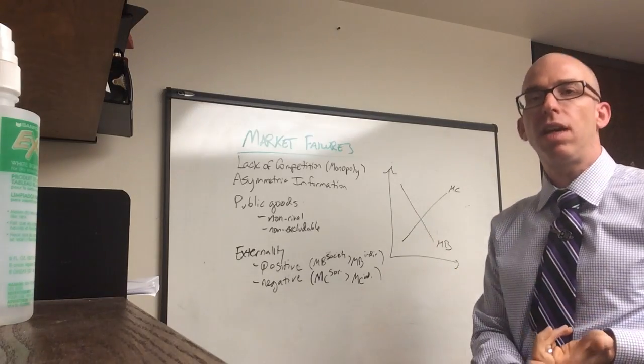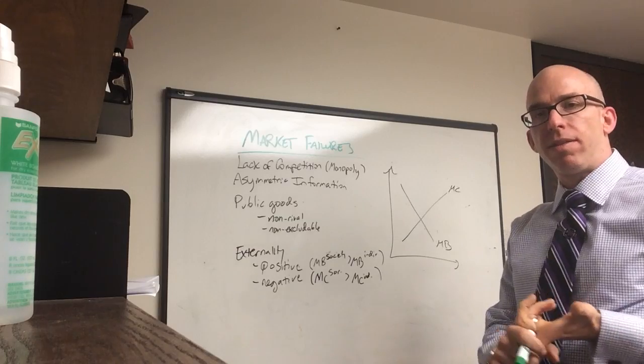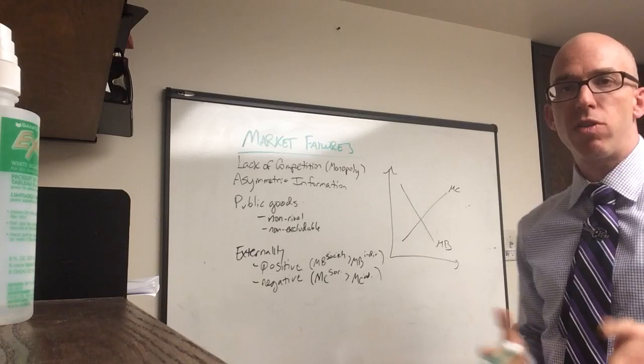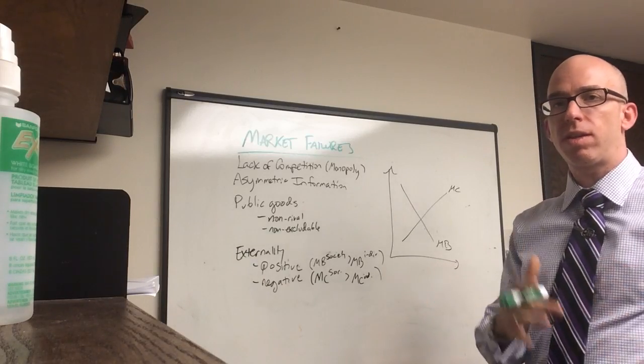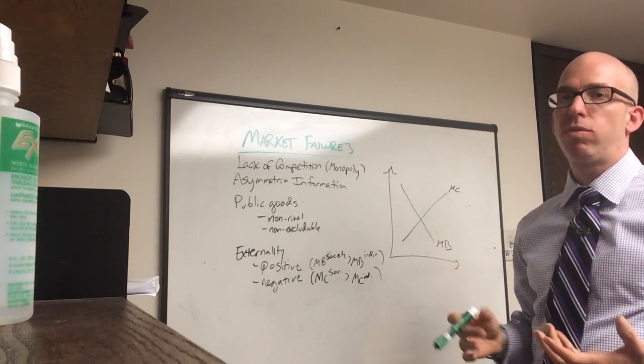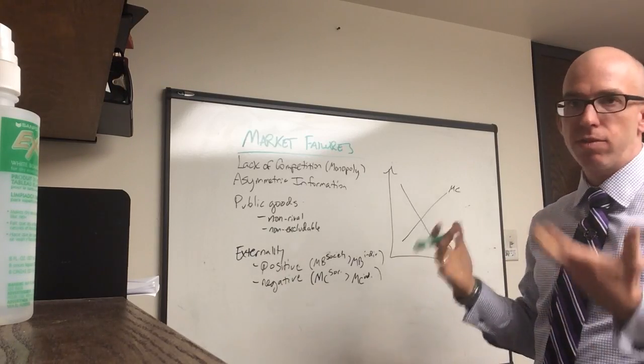In a macro class I think it's important to talk about the idea that government intervention might be necessary in some cases, particularly if you're talking about stimulating the economy or using monetary policy. So it's important to understand that in most cases there are some types of market failures, some room for the government, and so I usually talk about these four.